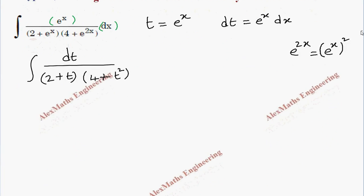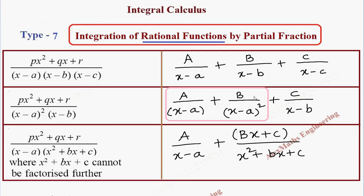Now we have to apply the partial fraction rule. Let us take the expression 1 over (t plus 2) times (t squared plus 4). We have a quadratic expression that is non-factorizable. We already discussed the three rules of partial fraction in the previous video. We are going to apply the last rule: for a linear factor we write A over (t plus 2), and for the quadratic factor we write (Bt plus C) over (t squared plus 4).